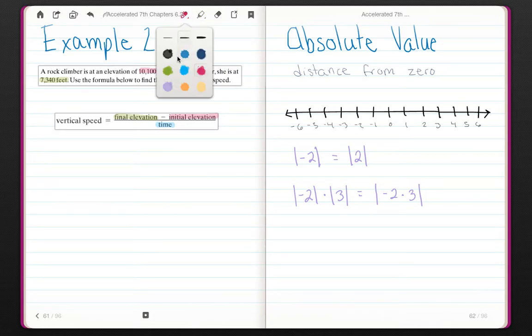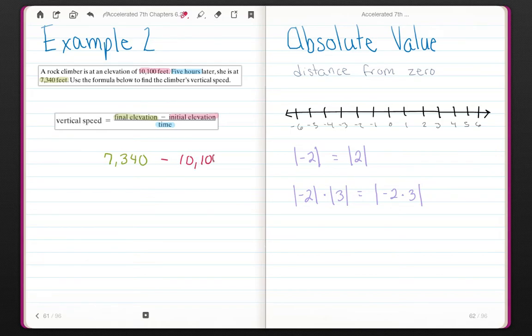So her speed then is going to be her final elevation, 7,340, minus her initial elevation, which was 10,100 feet. And that is all over 5, her time, 5 hours. So we have to solve the numerator first. I can't divide until I have a single number. So I'm going to change this to adding my opposite. Instead of subtraction, I'm going to add the opposite.